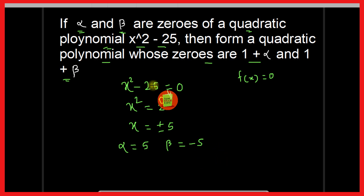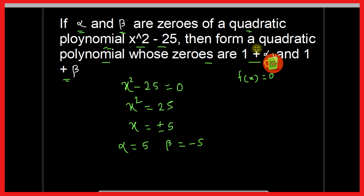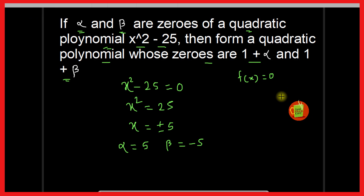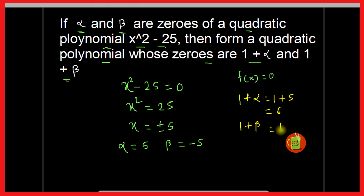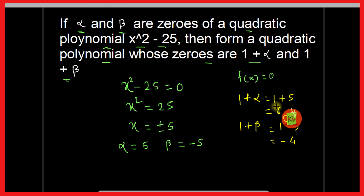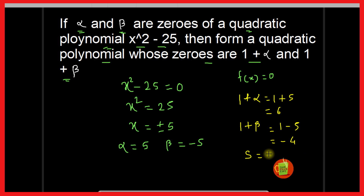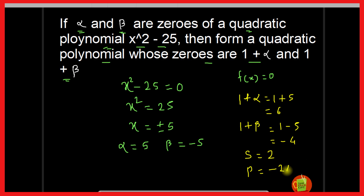So the roots of the given polynomial x squared minus 25 are 5 and minus 5, and you have to write the polynomial whose zeros are 1 plus alpha and 1 plus beta. So 1 plus alpha equals 1 plus 5, which is 6. And 1 plus beta equals 1 minus 5, which is minus 4. So the new roots of the new polynomial will be 6 and minus 4. The sum of the roots equals 6 minus 4, which is 2.